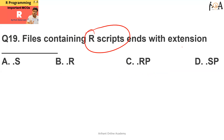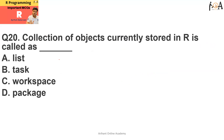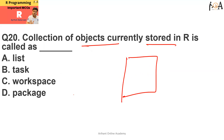Question number 19: files containing R script end with what extension? The answer is .R — the .R extension determines that a file is written in R script. Option B is correct. Question number 20: a collection of objects currently stored in R is called what? It is called a workspace. Option C is the correct answer.